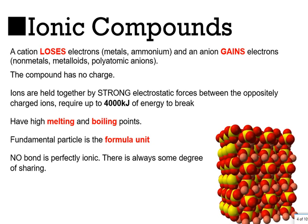Ionic compounds are the first type I want to talk about. Ionic compounds form when a cation loses electrons and another atom gains electrons and becomes an anion. They can consist of metals, nonmetals, and polyatomic ions, but the key feature is a cation and an anion with no net charge in the compound. They're held together by strong electrostatic forces that can require up to 4,000 kilojoules of energy to break, and they have very high melting points. We call the fundamental particle the formula unit.